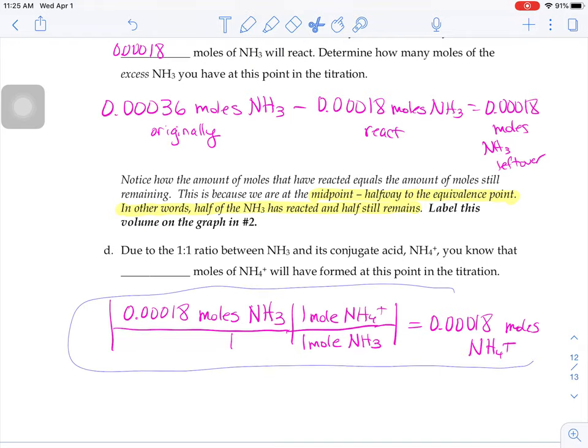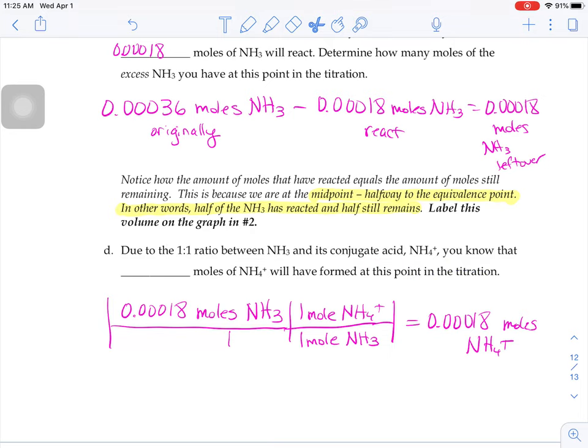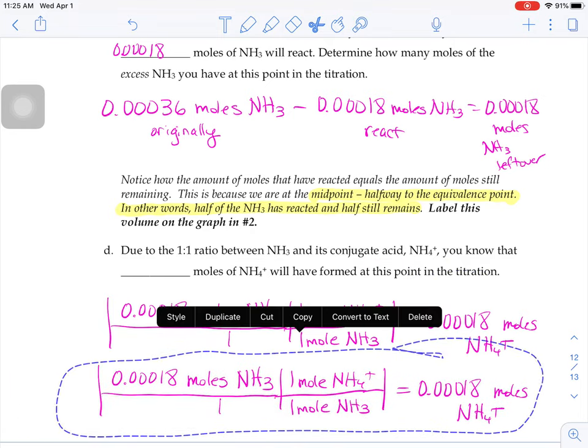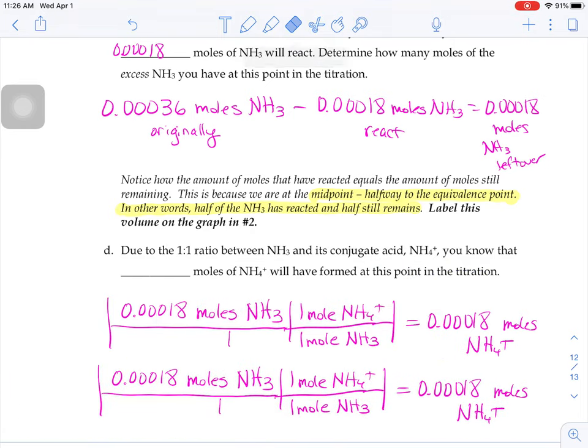We also know that at this point in the problem, that 0.00018 moles worth of H3O+ has reacted. Either way, we know 0.0018 moles worth of NH4+ will have formed at this point in the titration.